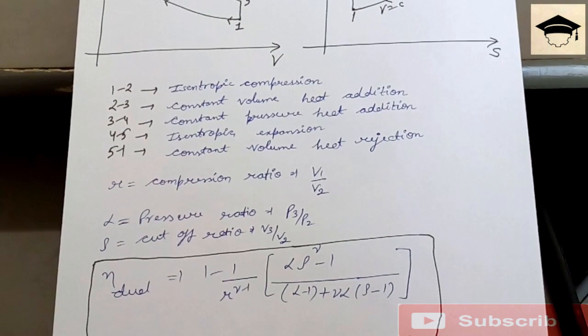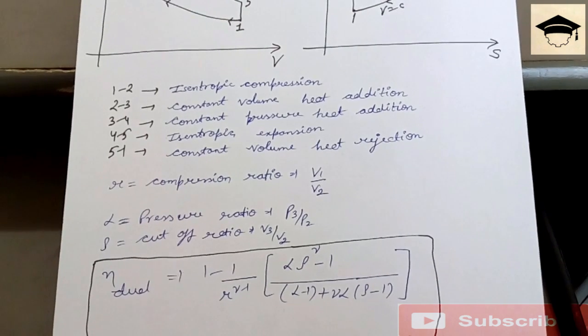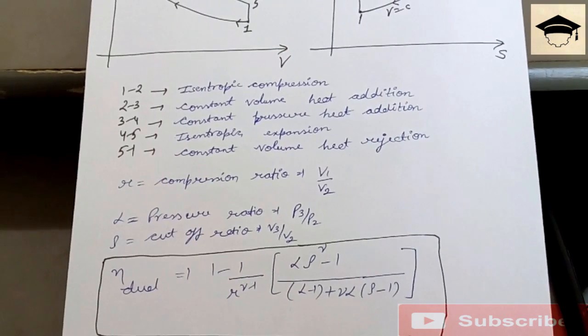Where gamma is equal to cp upon cv, and it is given by 1.414.